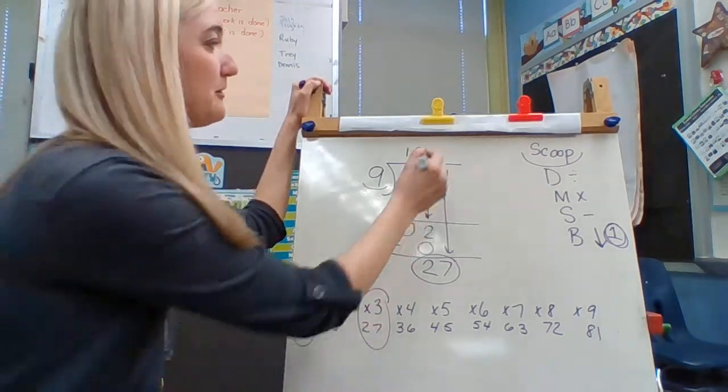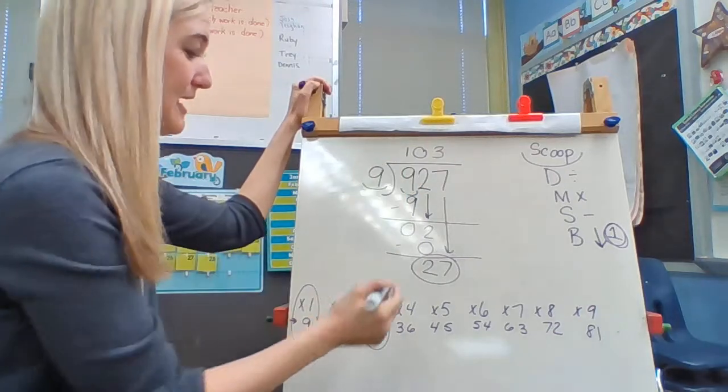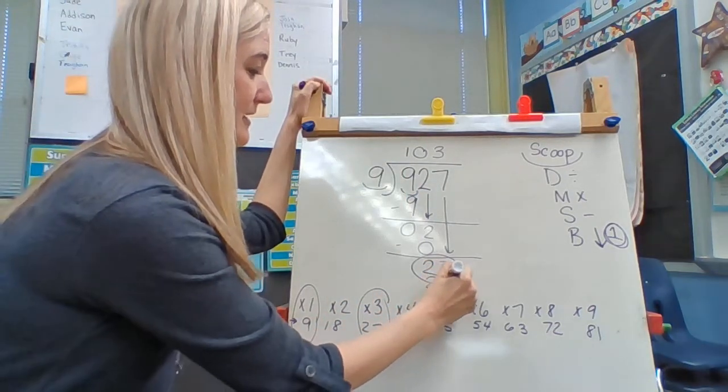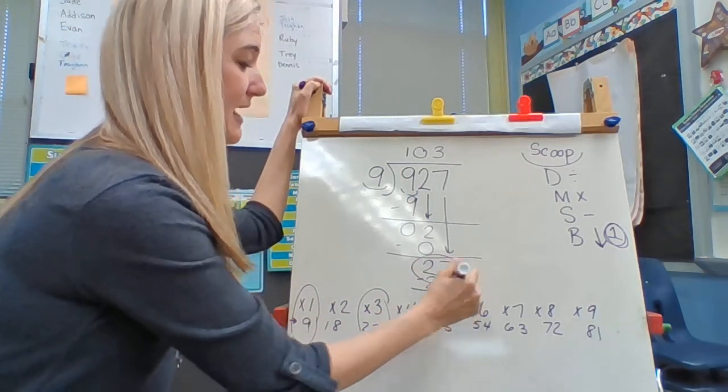The 3 is on the top, so I put the 3 on the top. 3 times 9 is 27. I subtract, and I'm left with nothing.